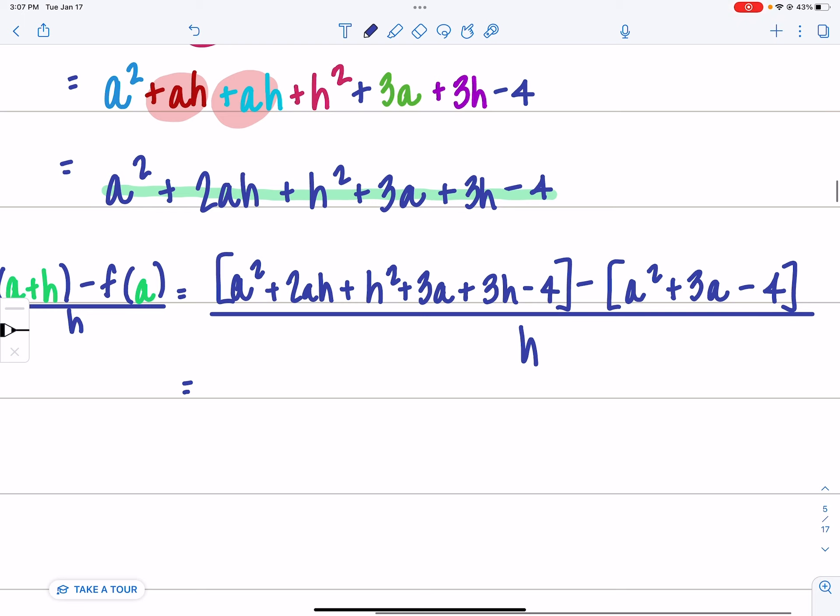So there's nothing I need to do to the first part. There's no sign out front so nothing is going to change in the first part. That's going to stay a squared plus 2ah plus h squared plus 3a plus 3h minus four.